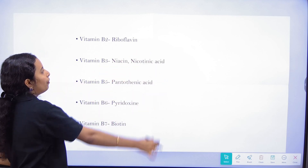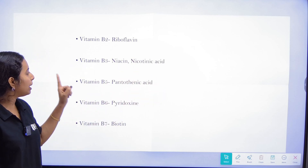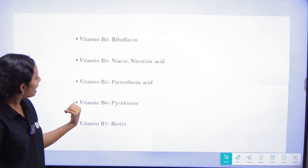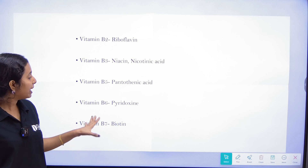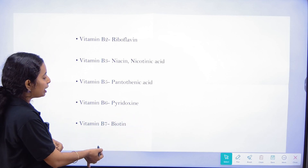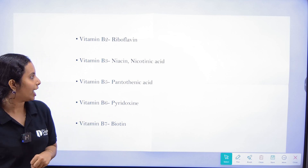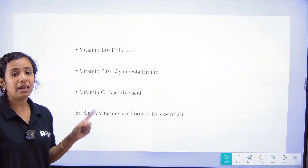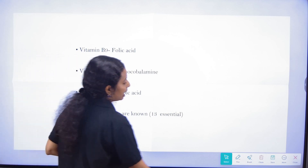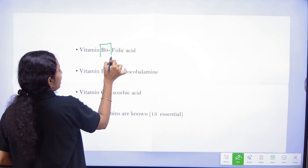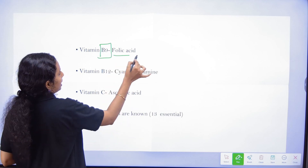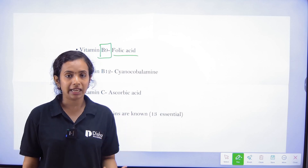B2 is Riboflavin. B3 is Nicotinic acid. B5 is Pantothenic acid. B6 is Pyridoxine. B7 is Biotin. B9 is Folic acid.